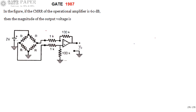We are discussing the GATE 1987 ECE paper. This question is related to analog circuits. Look at the diagram — the operational amplifier has a CMRR of 60 decibels. We need to find the magnitude of the output voltage V0.